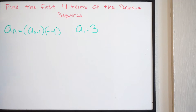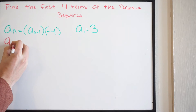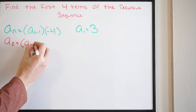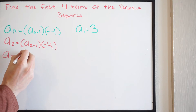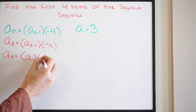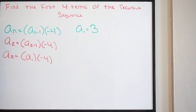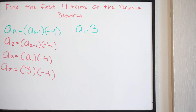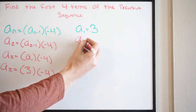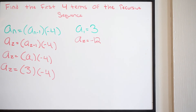So here's my variable n. I'm going to plug in 2, because I'm trying to find that second term. We'll have A of 2 equal to A of 2 minus 1, times negative 4. Look what happens: 2 minus 1 gives me A of 1. So rewriting this, we have A of 2 equal to A of 1 times negative 4. We know what A of 1 is — it's 3. So A of 2 equals 3 times negative 4, which is negative 12.